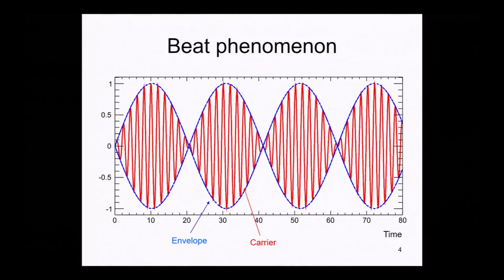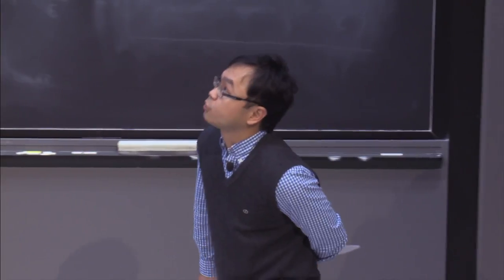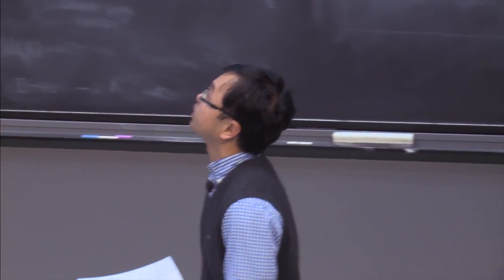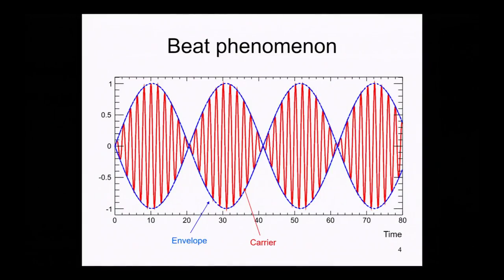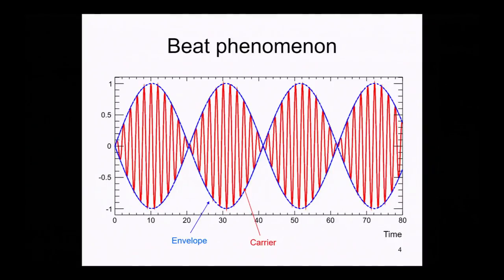The beat phenomenon happens when you overlap two harmonic waves with very similar but not identical wavelengths. When you add them together, you get something oscillating very fast — called the carrier — and the magnitude of oscillation varies slowly as a function of position, which we call the envelope.